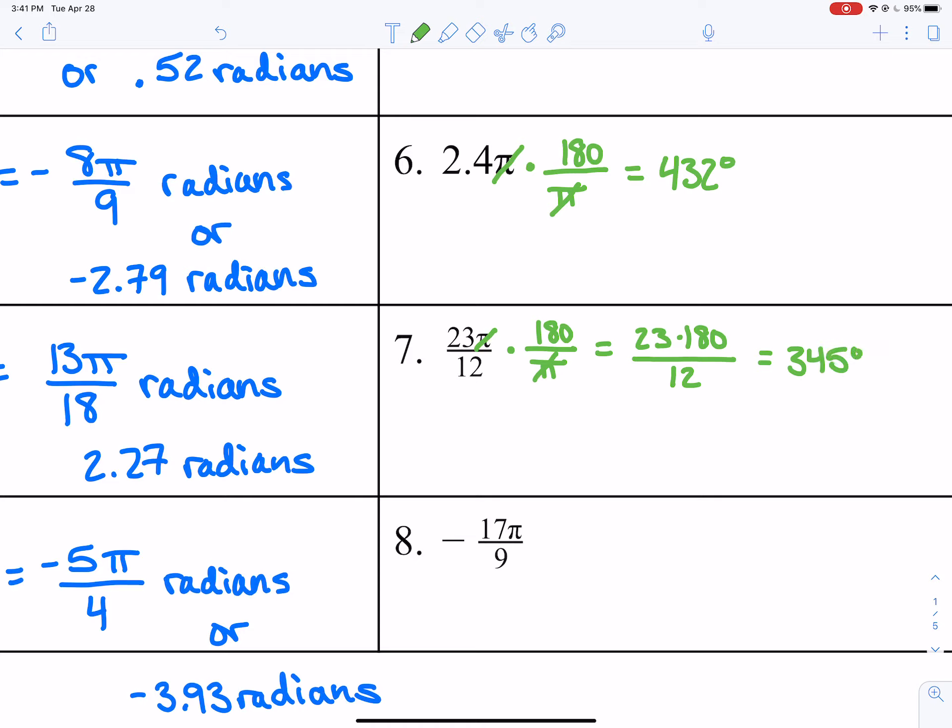And the last one is negative 17 pi over 9. Put pi in the bottom, the denominator, so that the pi will cancel out with the one in the numerator. And you get negative 17 times 180 divided by 9. Let me calculate: negative 17 times 180 is negative 3060, then divide that by 9 and I get negative 340 degrees.